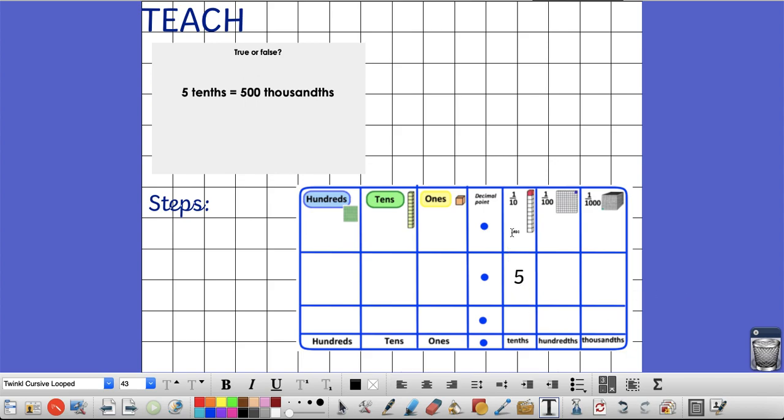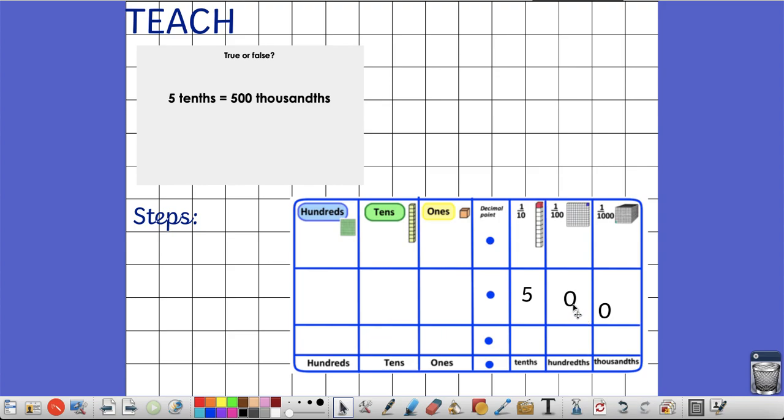I've got 5 in my tenths column. Now, if I was to put my zeros after it, it still equals 5 tenths. So I've got 0 hundredths and 0 thousandths. So it's still only 5 tenths. But if I wanted to write it in thousandths, I actually have 500 thousandths.